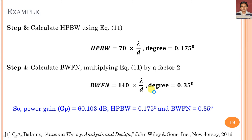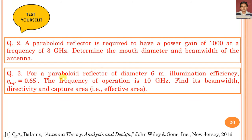Two additional problems are provided for self-testing: Problem 2 requires calculation of the diameter and beam width; Problem 3 requires calculation of beam width, directivity, and capture area — also called the effective area in the case of reflector antennas. These problems allow students to test their understanding of the theory discussed in this lecture.